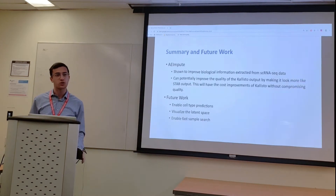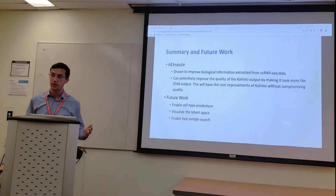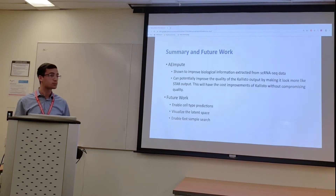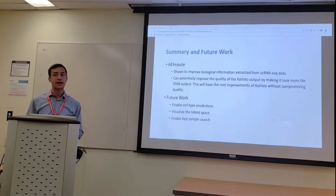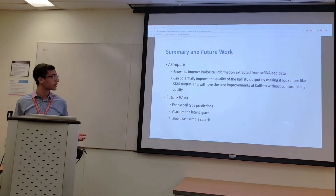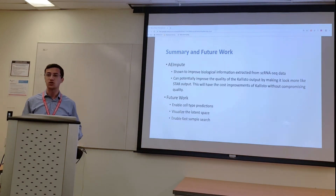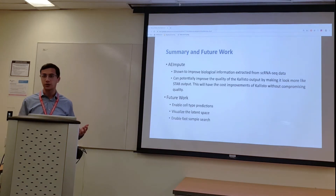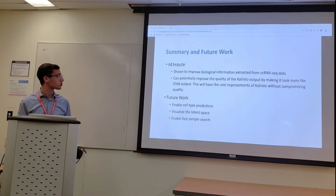In summary, AE-Impute, the project which I worked on over the summer, has been shown to increase the biological information in single-cell RNA data and may also serve as a translation method between two aligners and as a benchmark between them. Future work may include improving the model to enable cell-type predictions based on single-cell RNA-Seq data. Another interesting route would be to investigate and visualize the latent space to look at potential relationships and patterns between different samples, and to search for samples similar to a queried sample using similarity tests such as cosine similarity based on the representation of samples in the latent space.